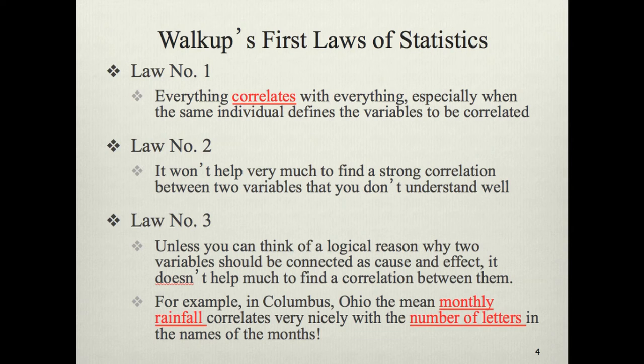Here's an example: in Columbus, Ohio, the mean monthly rainfall correlates very nicely with the number of letters in the names of the months. Can we say that rain causes the names of months? No. Can we say that names of months cause rain? No. They're correlated, but there's really no sound theoretical rationale for why they should be — this is just an aberration we find all over the world.